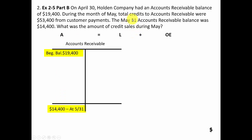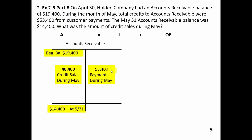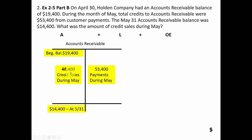The May 31st ending balance was fourteen thousand four hundred dollars. We have the beginning balance, ending balance, and credits to the account of fifty-three thousand four hundred, which reduces accounts receivable. The account went down by five thousand dollars, meaning the credit side is five thousand dollars higher than the debit side. So fifty-three thousand four hundred minus five thousand equals forty-eight thousand four hundred — that's the amount of credit sales during May. A credit sale is recorded by debiting accounts receivable and crediting sales.